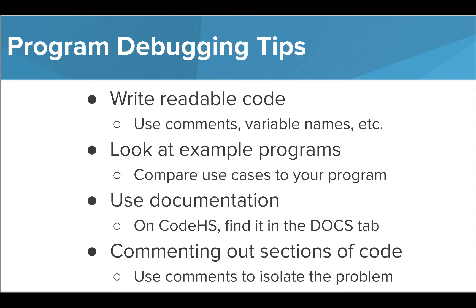You may already know some tips for debugging programs, but let's quickly go through a few options. The first thing that helps make debugging easier is writing readable code from the start. This includes adding informative comments, using explanatory variable names, and modularizing your program or breaking it down into smaller parts. Looking through example programs and using documentation and resources is also a great way to navigate through issues in your programs. Compare the syntax and use of certain commands or structures in a program that you know works to help you find out why yours doesn't.